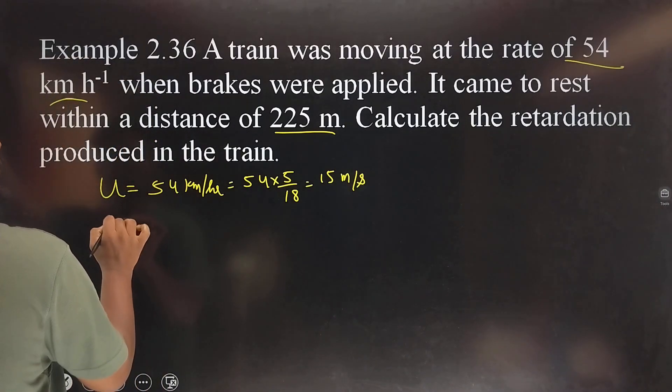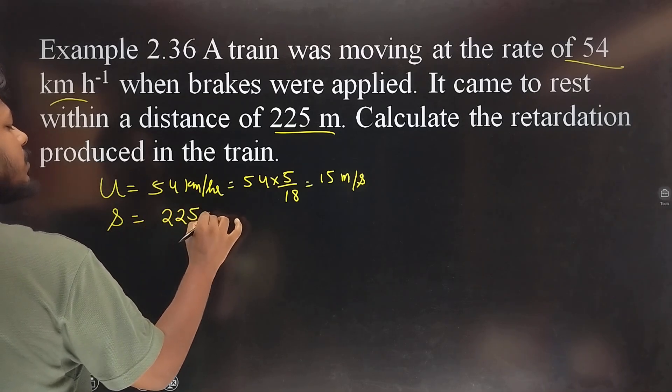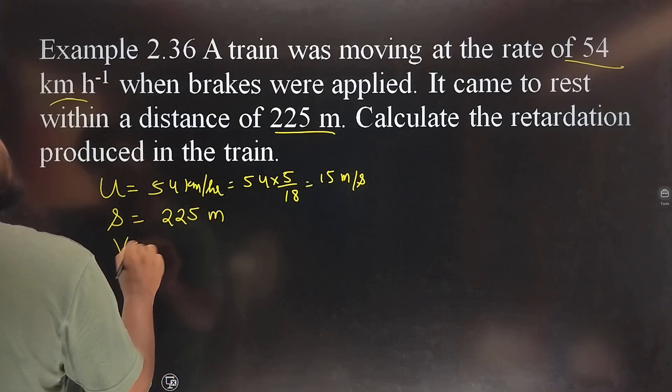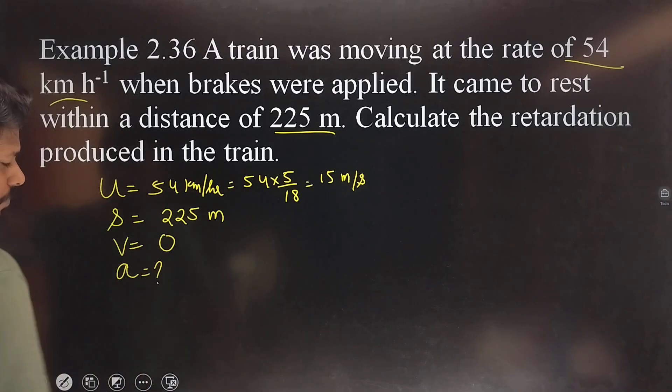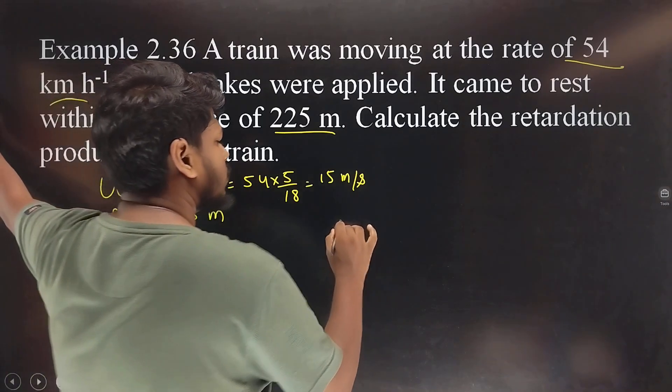Distance is 225 meters traveled. The rest is the final rest is zero. For acceleration, we call the formula v squared minus u squared equals 2as.